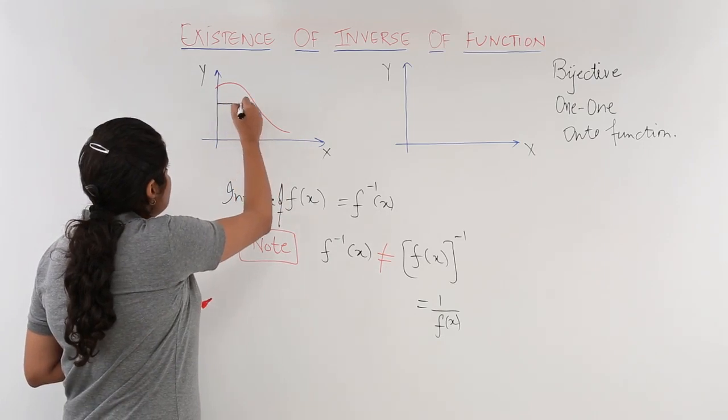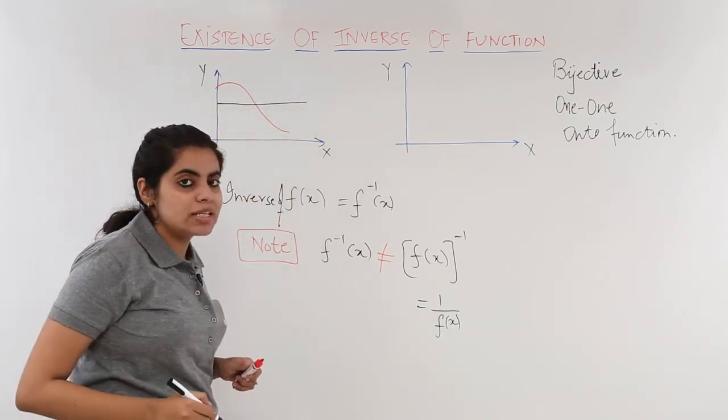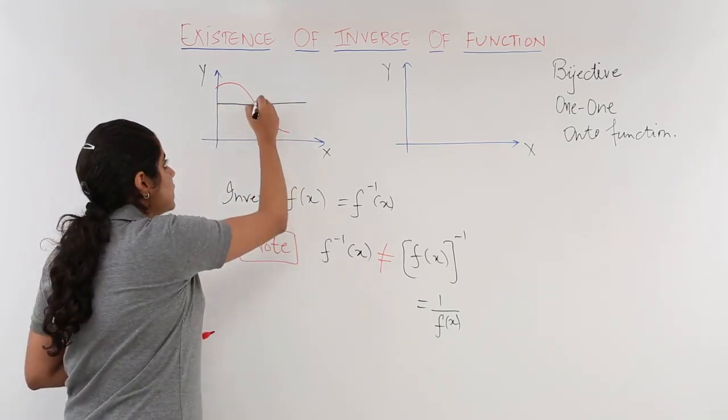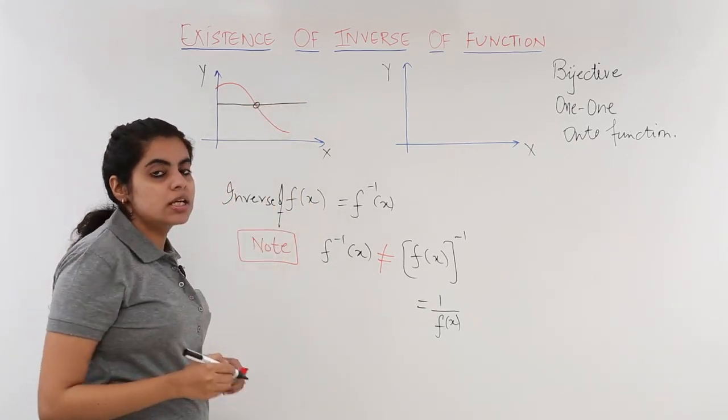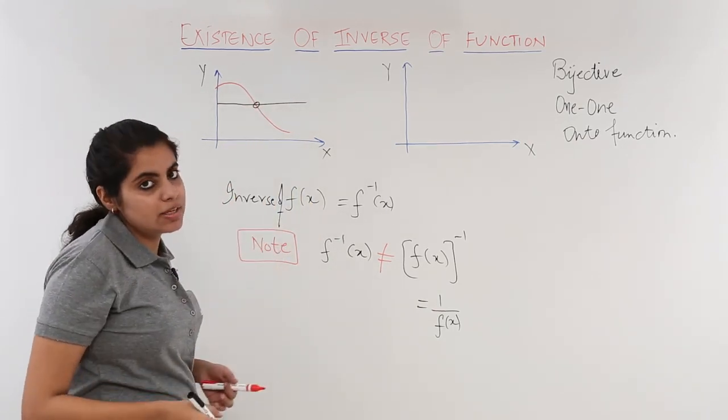What is the criteria? The criteria is simply draw a line parallel to x-axis. If it cuts the graph at only one point, my function is one-one otherwise it is not.